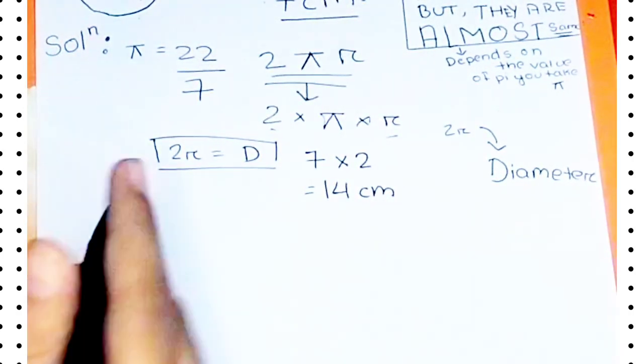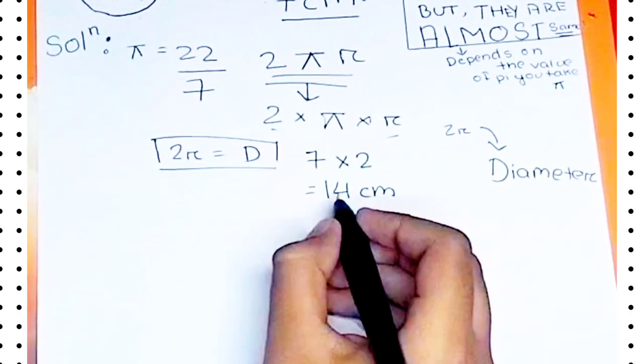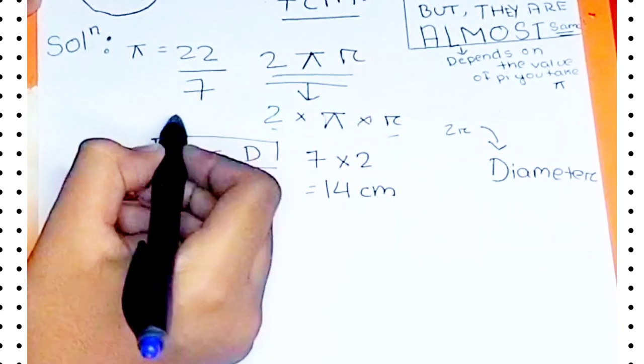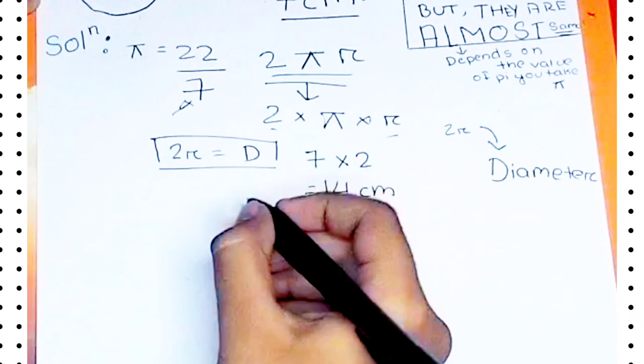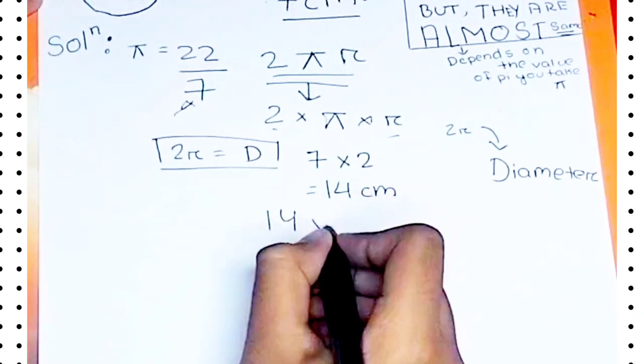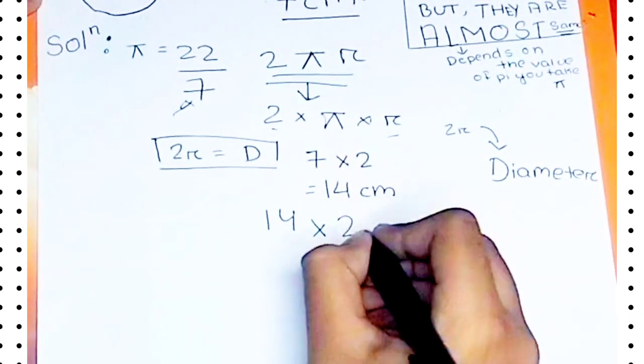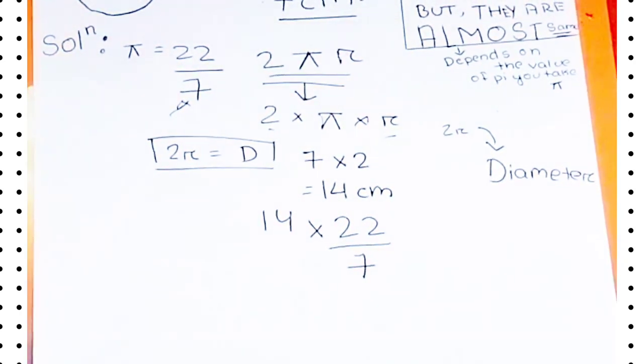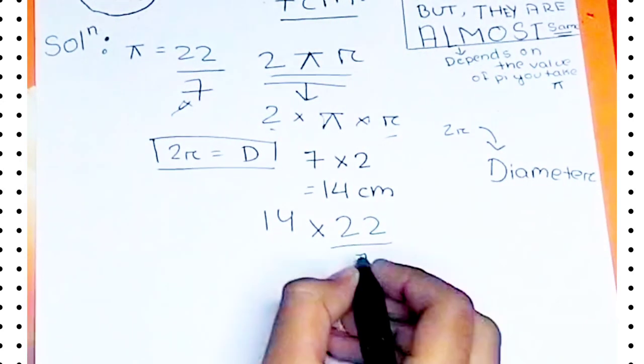Now we need to find the circumference so we need to multiply this value with pi. First example we have taken the pi's value as this one, so let's multiply 14 into 22 by 7.